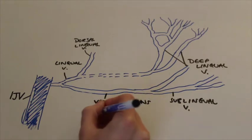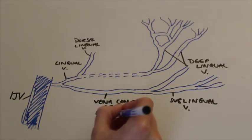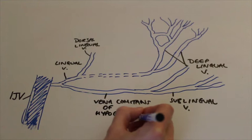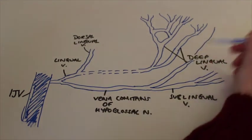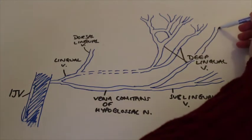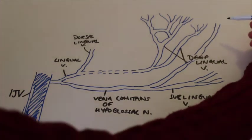I've also just labelled what's called the vena cometans of hypoglossal nerve, also called the ranine vein. Vena cometans just means accompanying, something that accompanies. So it's the vein which accompanies the hypoglossal nerve.